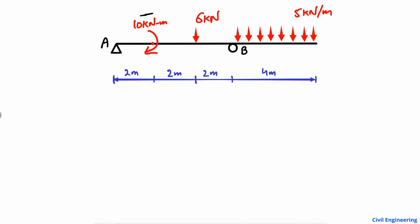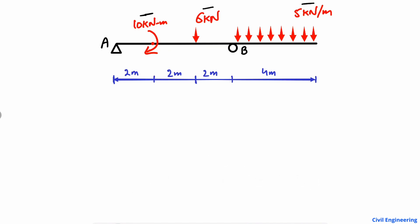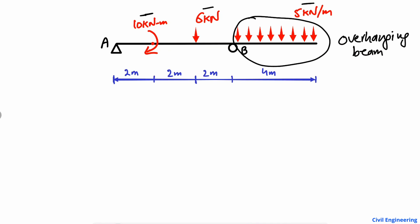We see here that there is an internal moment of 10 kilonewton-meter acting on the beam, and also there is a point load of 6 kilonewton. There is also a uniformly distributed load of 5 kilonewton per meter acting on the overhanging portion of the beam. It is called an overhanging beam because one portion of the beam is overhanging while the other portion is simply supported.